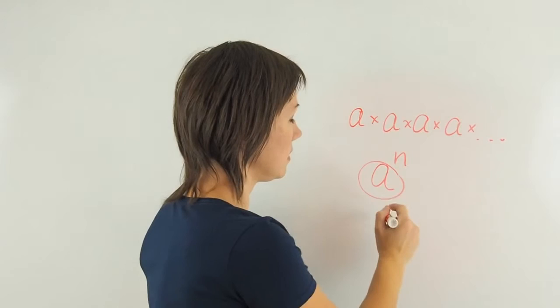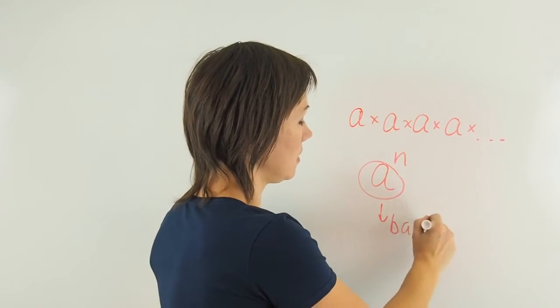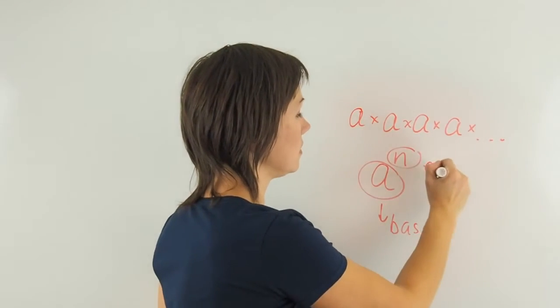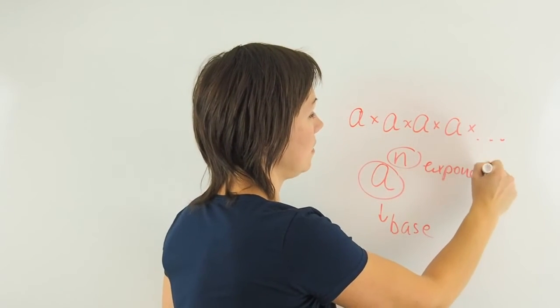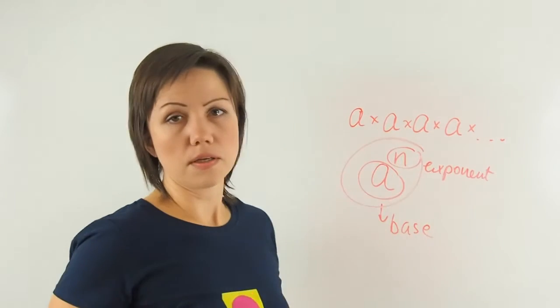So the way we record it is this way, where a is the base, n is the exponent, and the whole expression is called power.